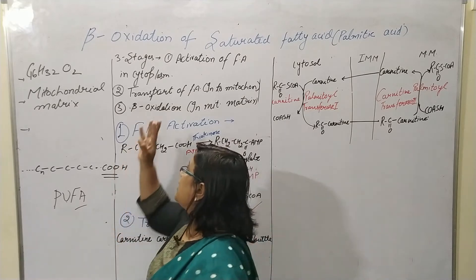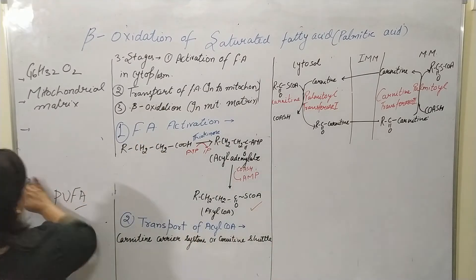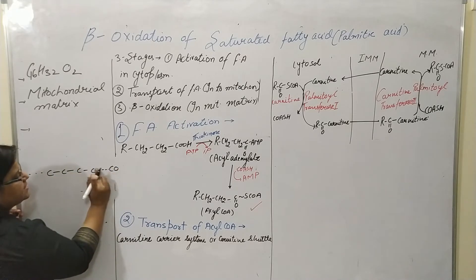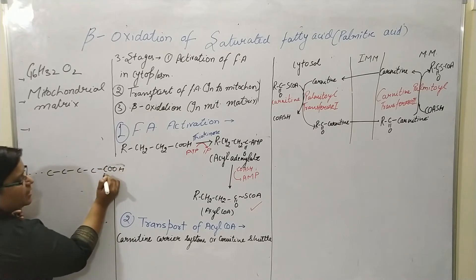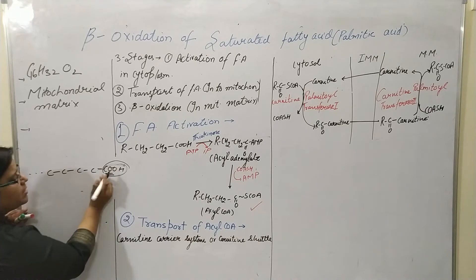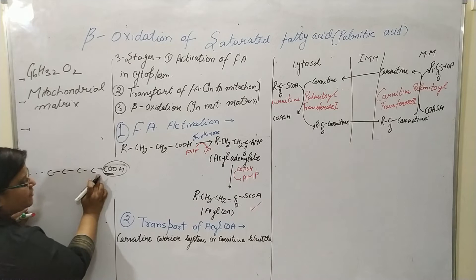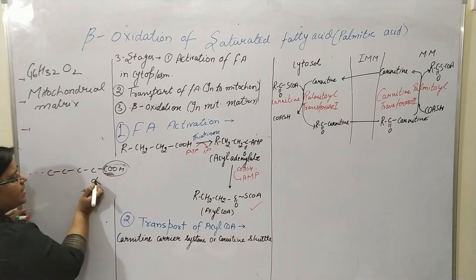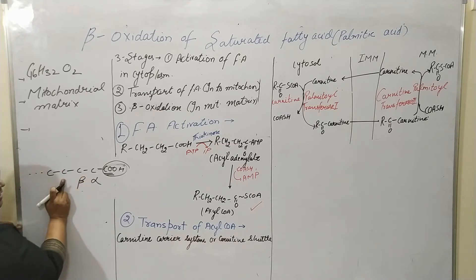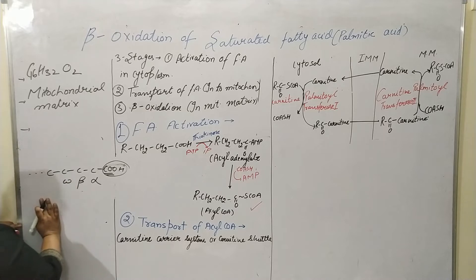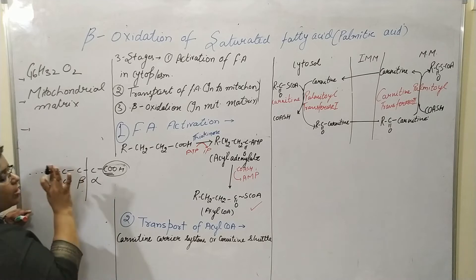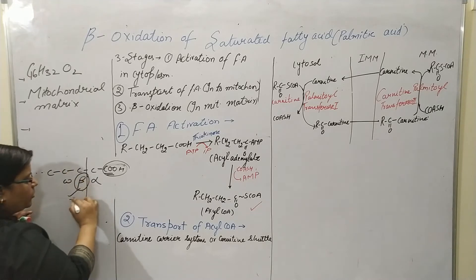Now come to the oxidation part. Consider a carbon chain with a COOH group at the last terminal. The functional group is the carboxylic group. The carbon nearest to that functional group is the alpha carbon. Just beside the alpha carbon is the beta carbon, and beside the beta carbon is the omega carbon. Beta oxidation means the metabolization is targeted on the beta carbon.